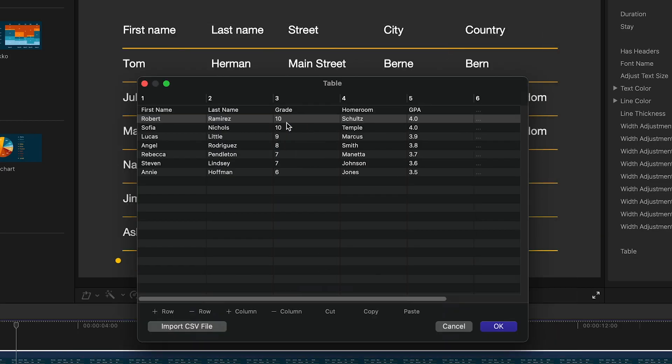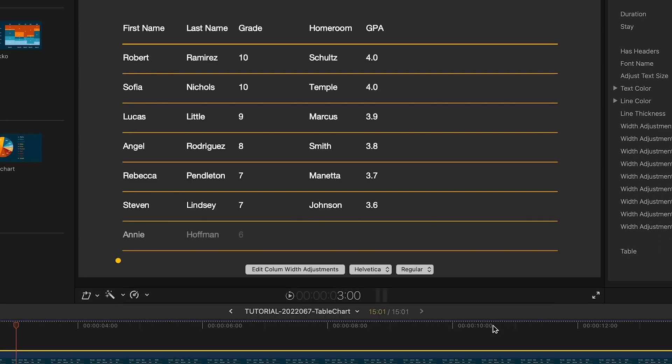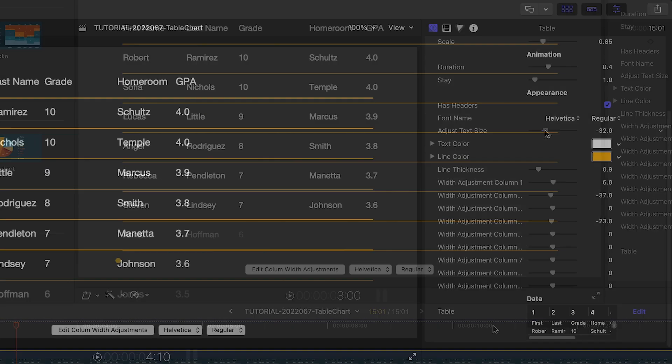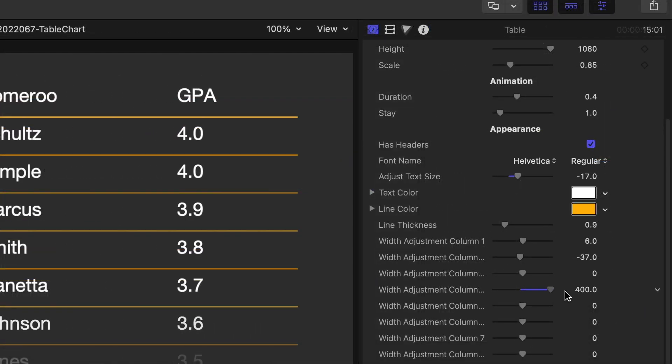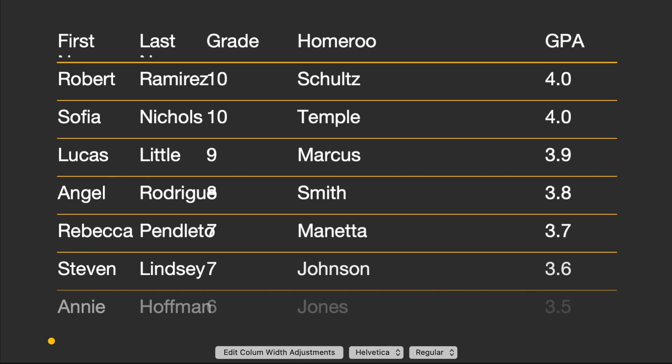I have more rows than in the preset, but it adjusted automatically. I'll adjust the text size up and adjust the widths of my columns to spread the data across the table.